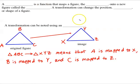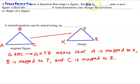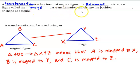First of all, we'll identify some terminology. A transformation is a function that maps a figure — and that figure, before any transformation has taken place, is called the pre-image — onto a new figure called the image. So after performing whatever transformation has been called for, we now have the image. A transformation can change the position, the size, or the shape of a figure.